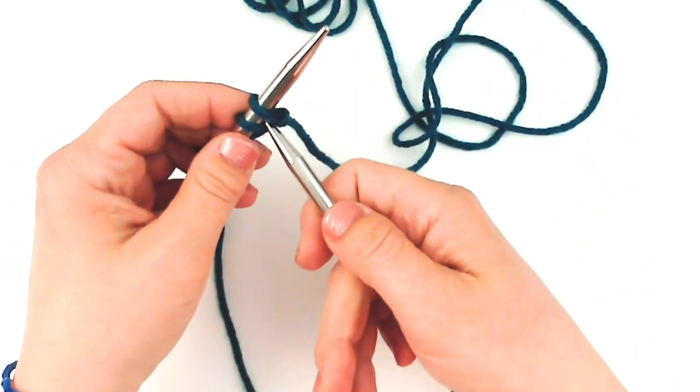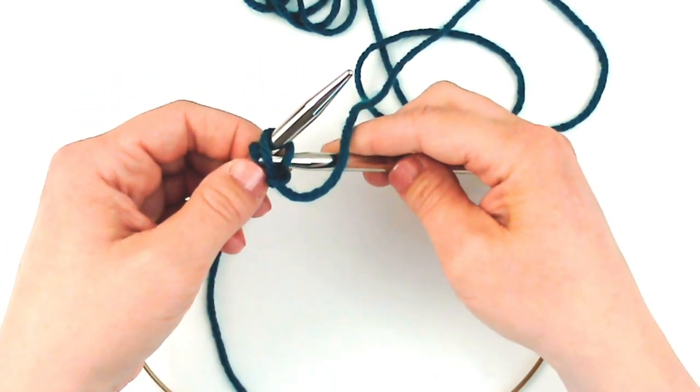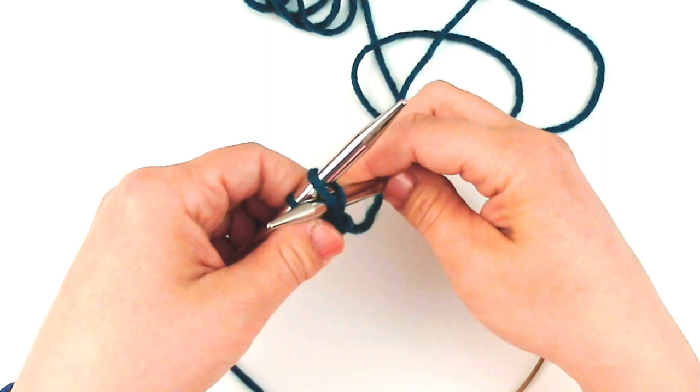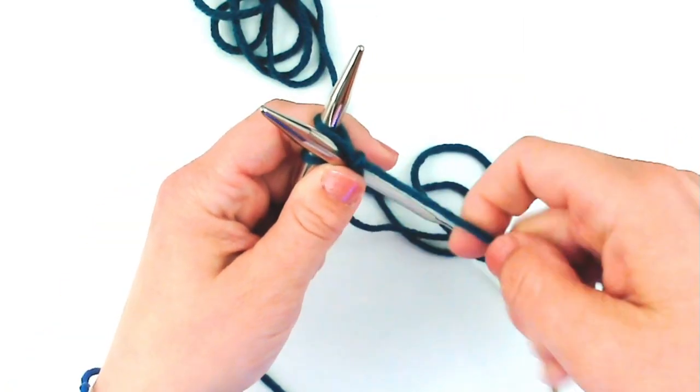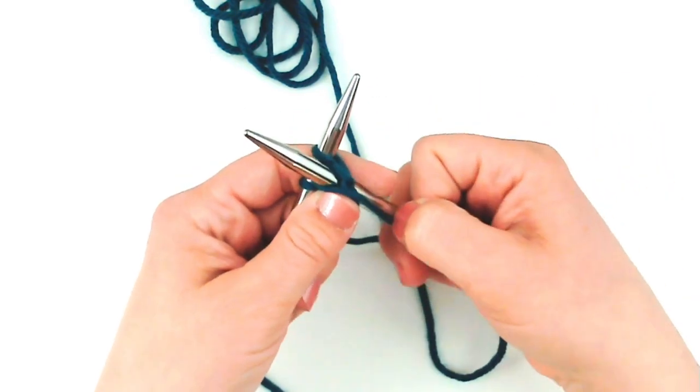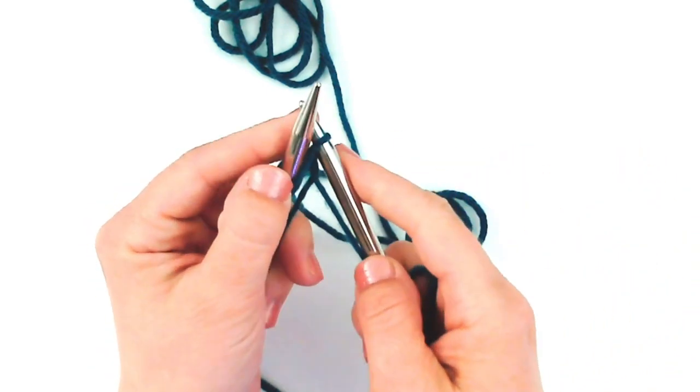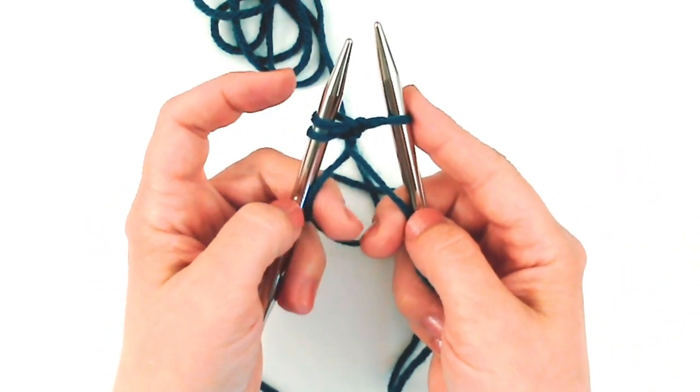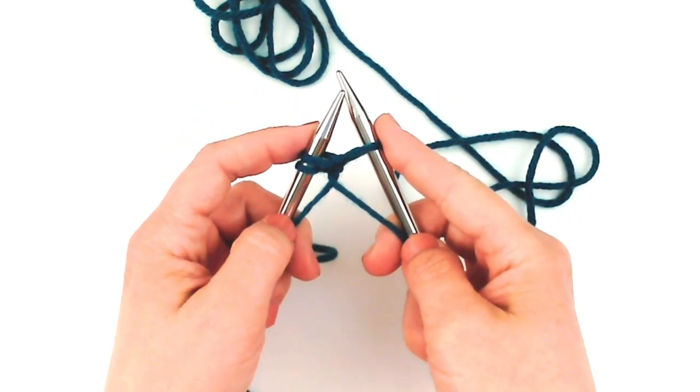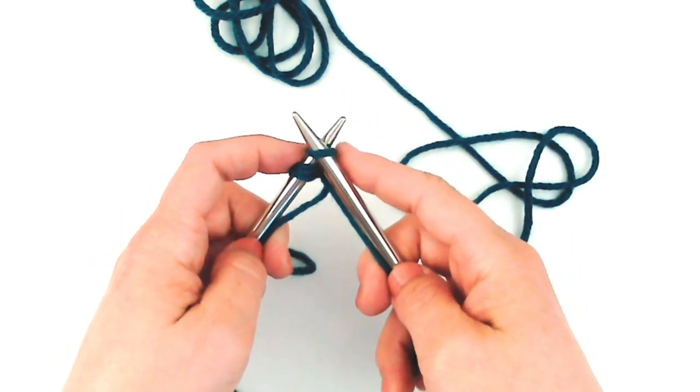When you work it knitwise, you insert your needle between the two stitches from front to back. Since we're working purlwise here, I'm going to insert my right-hand needle between these two stitches from back to front. I then take my yarn from the front, wrap it around my right-hand needle as though I'm purling, and then bring that new stitch towards the back of the work. So I have a new stitch here on the right-hand needle. I have not removed anything from the left-hand needle, and I'm going to swing my left-hand needle down to capture the new stitch onto it.